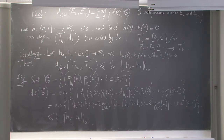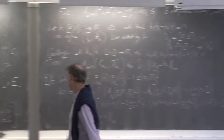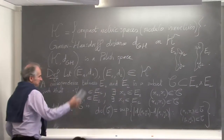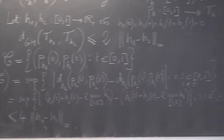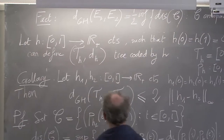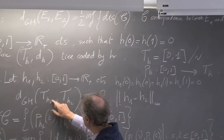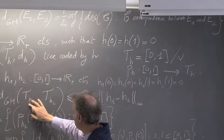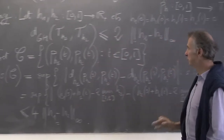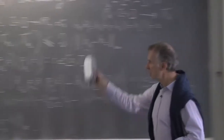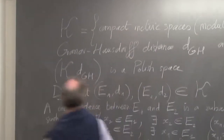This corollary will be useful because essentially what we saw in the first lectures was all about the convergence of coding functions of discrete trees. In the discrete setting we had results about the convergence of functions h for a sequence of discrete trees. We can combine these results with the corollary to get that the trees themselves converge — not only the coding functions, but the trees. I will explain that later.